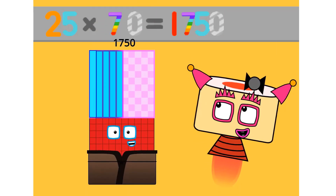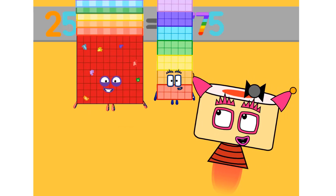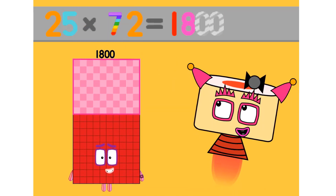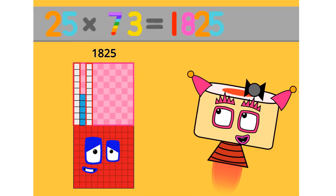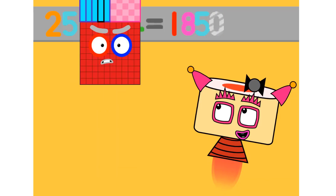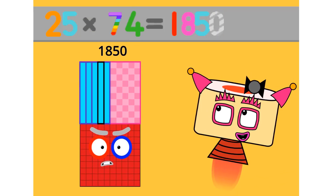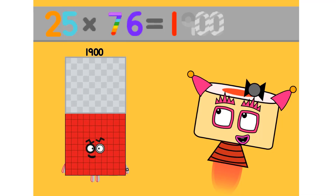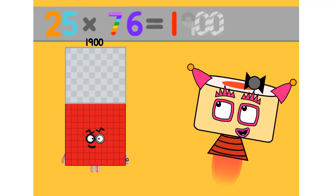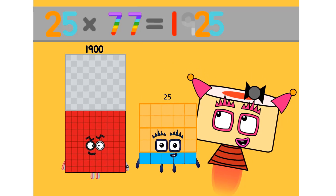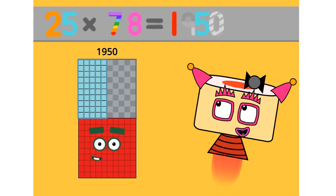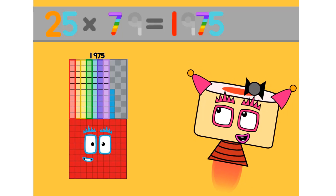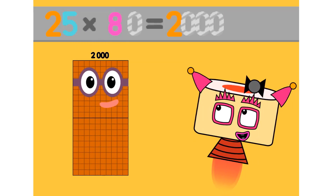25 times 70 equals 1750. 25 times 71 equals 1775. 25 times 72 equals 1800. 25 times 73 equals 1825. 25 times 74 equals 1850. 25 times 75 equals 1875. 25 times 76 equals 1900. 25 times 80 equals 2000.